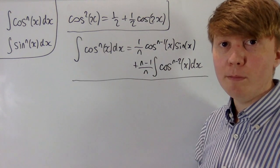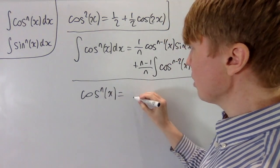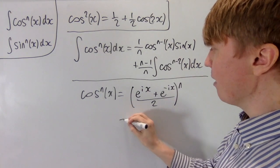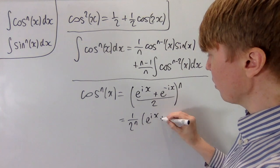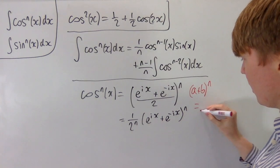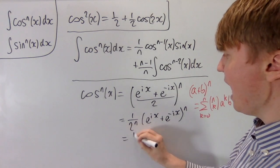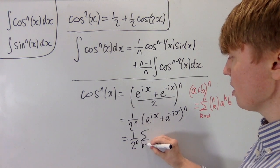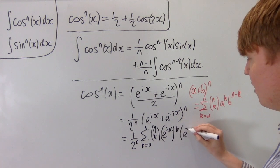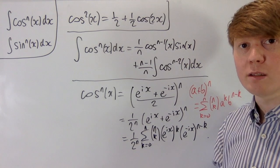The approach we're going to use relies on the complex definitions of cos and sin, and also our knowledge of the binomial expansion. cos^n(x), using the complex exponential definition, can be written as (e^(ix) + e^(-ix))/2 all raised to the power of n. Taking out a factor of 1/2^n, we get the binomial (e^(ix) + e^(-ix))^n. Using the binomial theorem — (a+b)^n = sum from k=0 to n of C(n,k)·a^k·b^(n-k) — with a = e^(ix) and b = e^(-ix), we get the sum of C(n,k)·e^(ikx)·e^(-i(n-k)x).